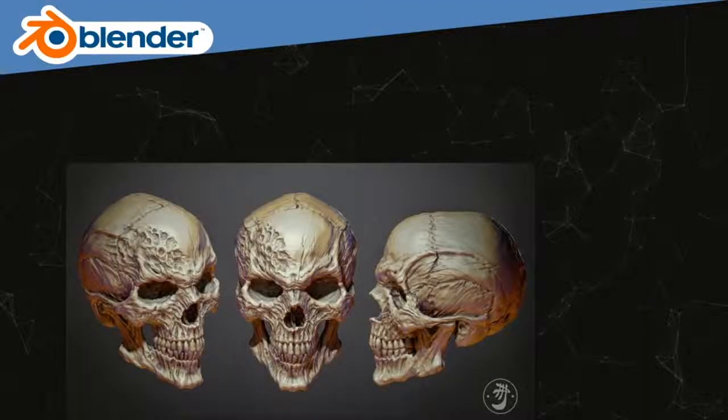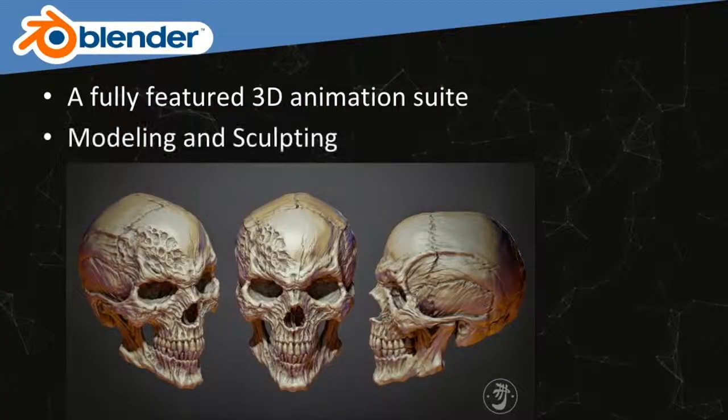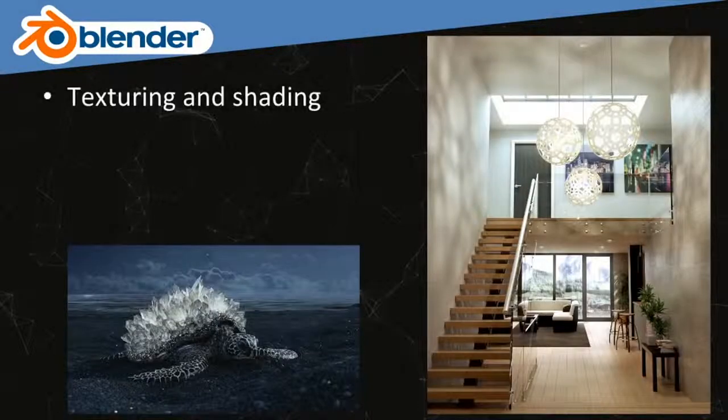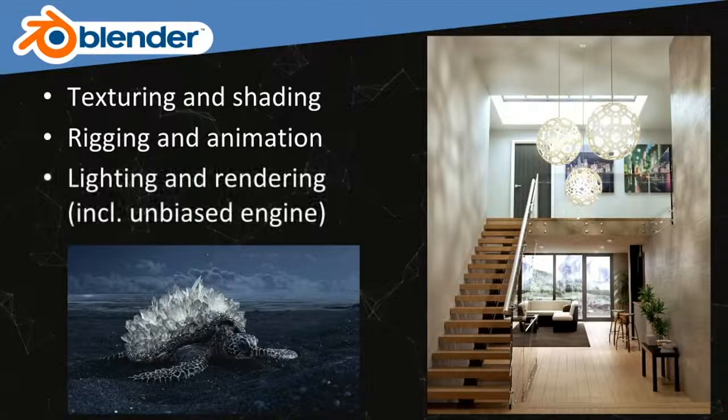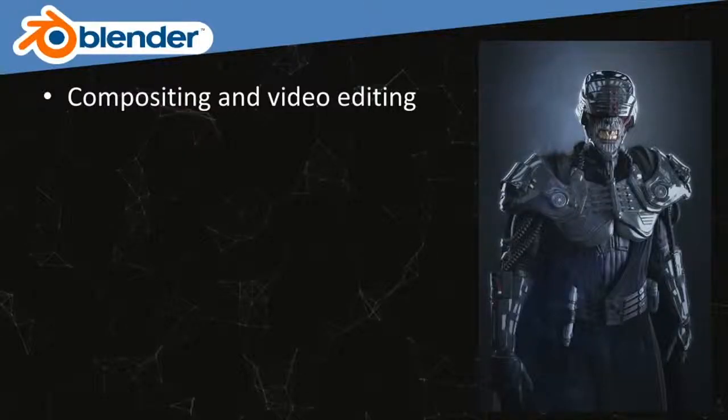Blender is a full-featured animation program, very similar to others you might have heard of, like 3D Studio Max, Maya, Modo, or Cinema 4D. It has modeling and sculpting tools, texturing and shading, lighting, rigging and animation, and rendering. It actually has two rendering engines: one is called the Scanline Engine for stylized graphics, and the other is a photorealistic path tracer called Cycles. There are also compositing and video editing tools.